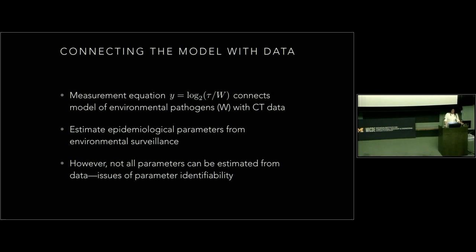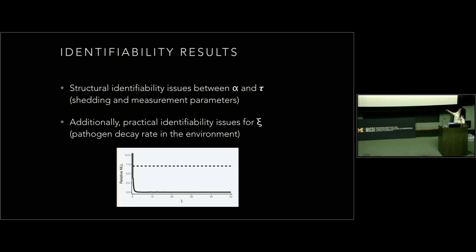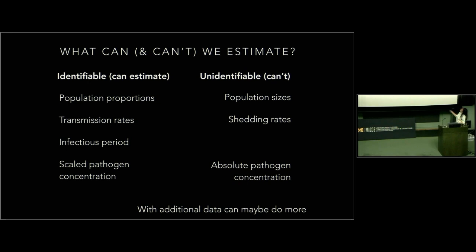Of course, identifiability issues cropped up again — structural identifiability issues between the shedding and measurement parameters, and practical identifiability issues for the decay rate of the pathogen in the environment, where the profile likelihood is nearly flat. You can re-parameterize and reduce dimensions to work some of this out. What you can recover are population proportions, transmission rates, and some other parameters. You cannot get actual population sizes. From this data and model, you can estimate the fraction of the population that was shedding or infectious at a given time, but not the absolute number.